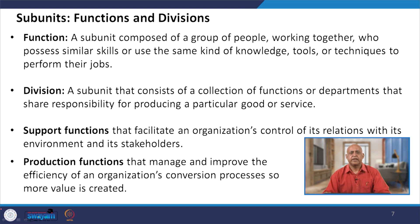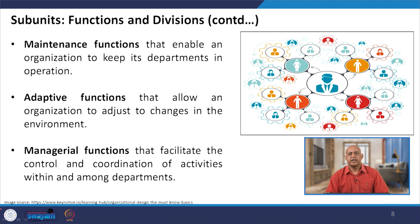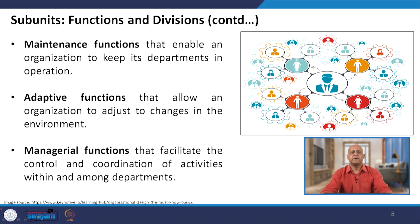Organization structure normally talks about division as the sharing of responsibility — for example, marketing division, finance division, operations division, HR division. These create particular functions and divisions. In addition to support functions, there are maintenance functions that enable an organization to keep its departments in operation. For example, staff such as fitters, turners, welders, and electricians maintain and keep departments in operation, addressing any breakdowns that occur.